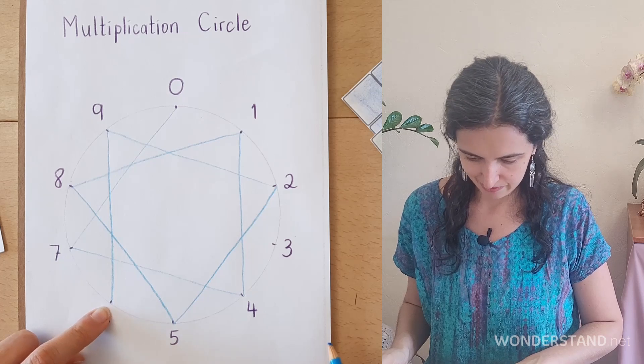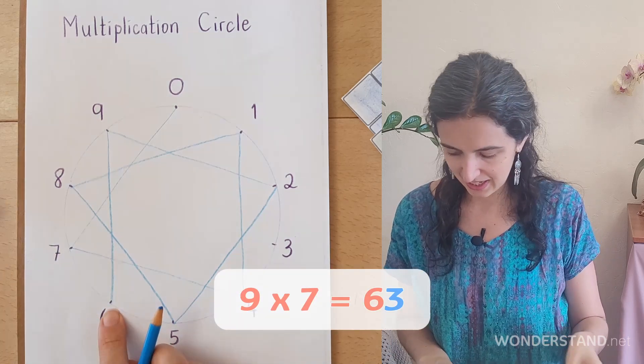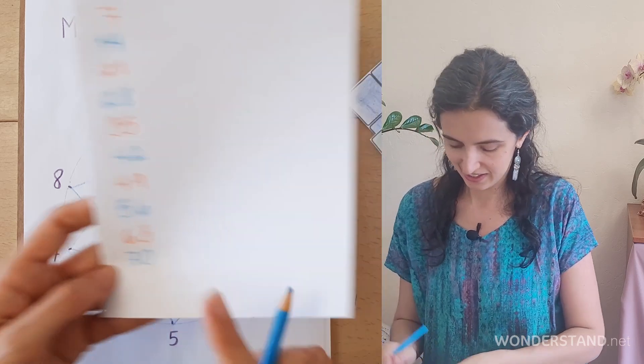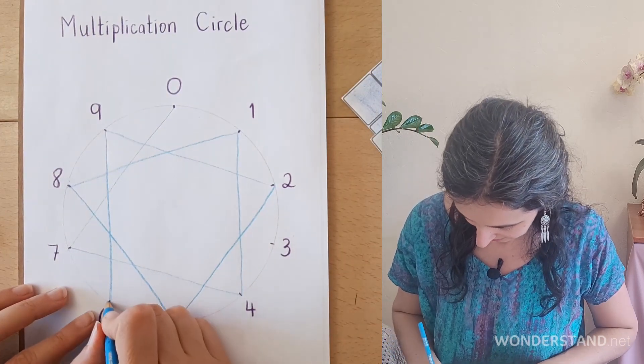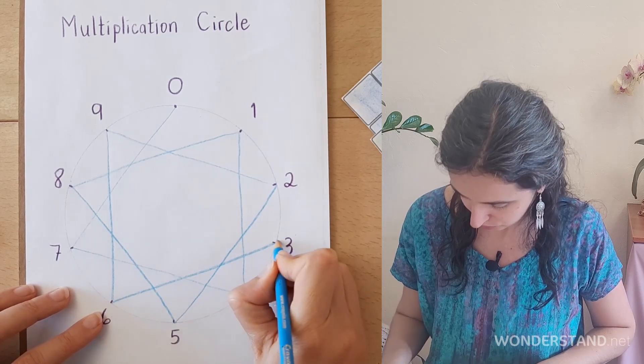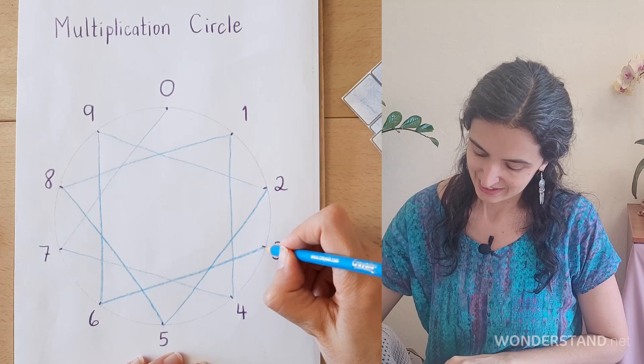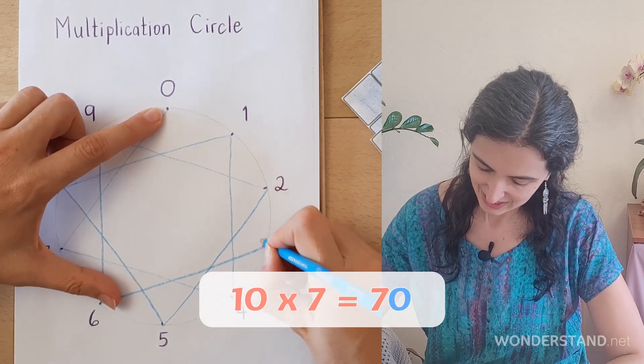9 times 7. 9 times 7 is 63. We go from 56 to 63. And the last one is 10 times 7. 70.